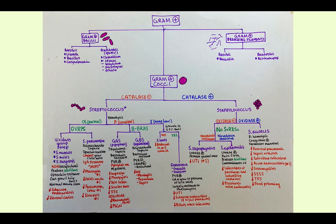Here is the classification algorithm for gram-positive cocci. You've got something under the microscope that stains purple — your next step is to figure out the shape. If it's a rod, it's a bacillus; if it's a sphere, it's a coccus. Once you know it's a coccus, determine if it's catalase positive or negative. Catalase positive means staph; catalase negative means strep. Alternatively, if it clumps in clusters it's staph; if it forms chains it's strep.